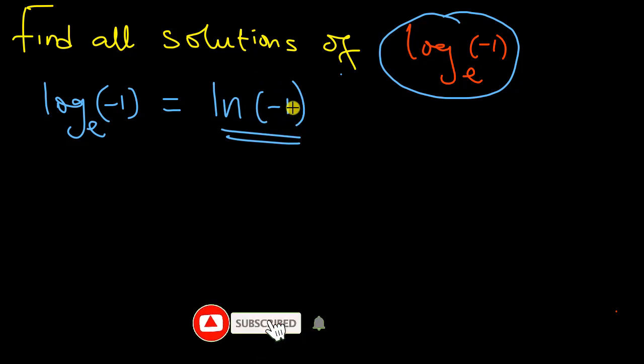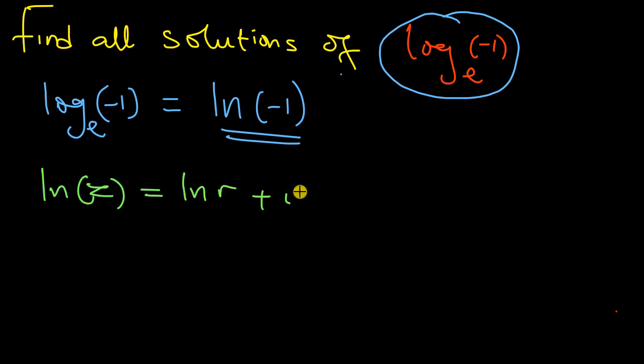But in the complex world this has a solution. In one of my previous videos, which I will leave in the description, I actually made a video showing you that the natural log of a complex number z is given by the log of r plus i into theta plus 2πn, where theta is the argument of the complex number and r is the modulus.